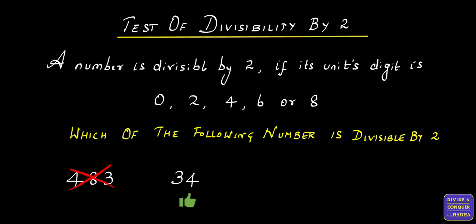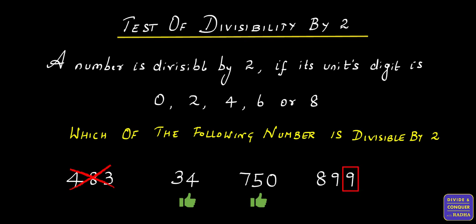750. The number in the unit's digit is 0, which satisfies the above rule. Therefore, 750 is divisible by 2. 899. The number in the unit's digit is 9, which is not divisible by 2 and doesn't satisfy the above rule. Therefore, 899 is not divisible by 2.